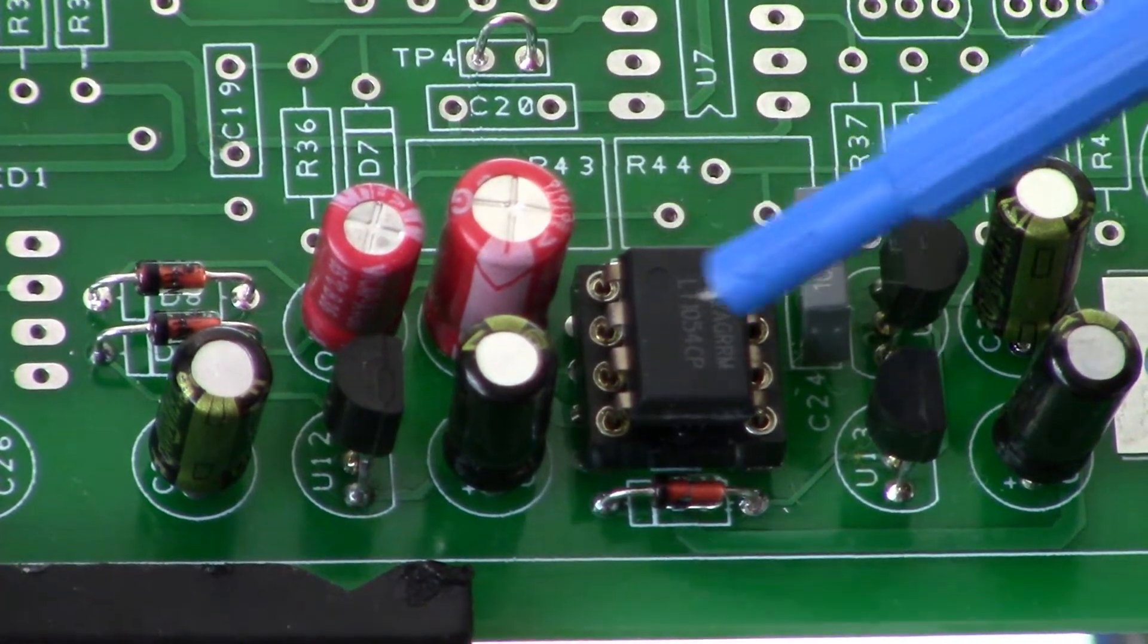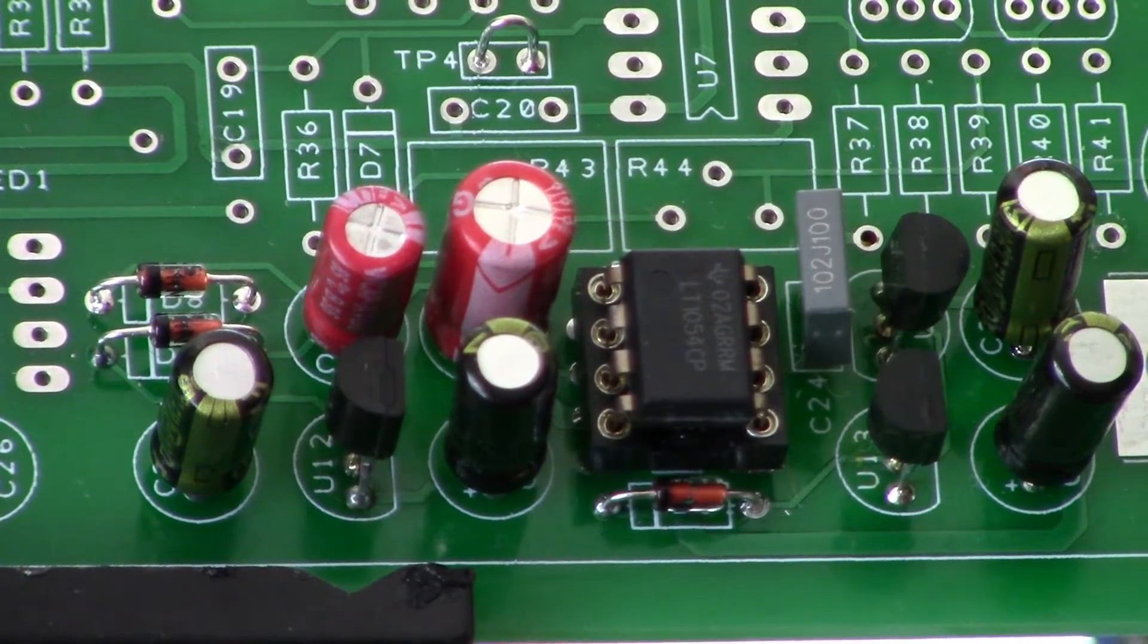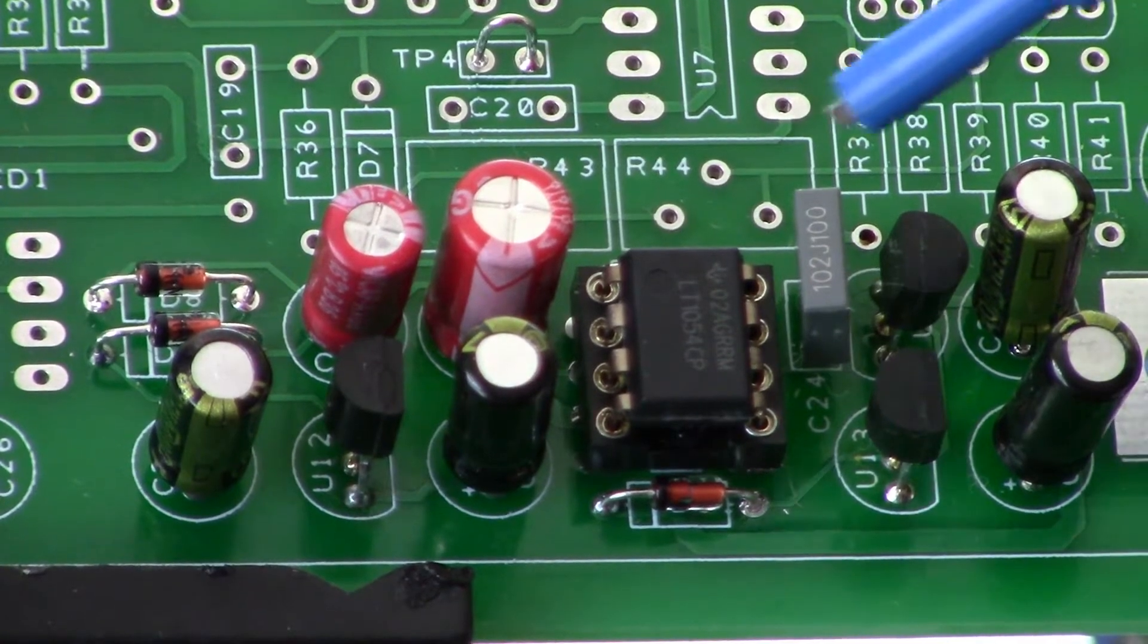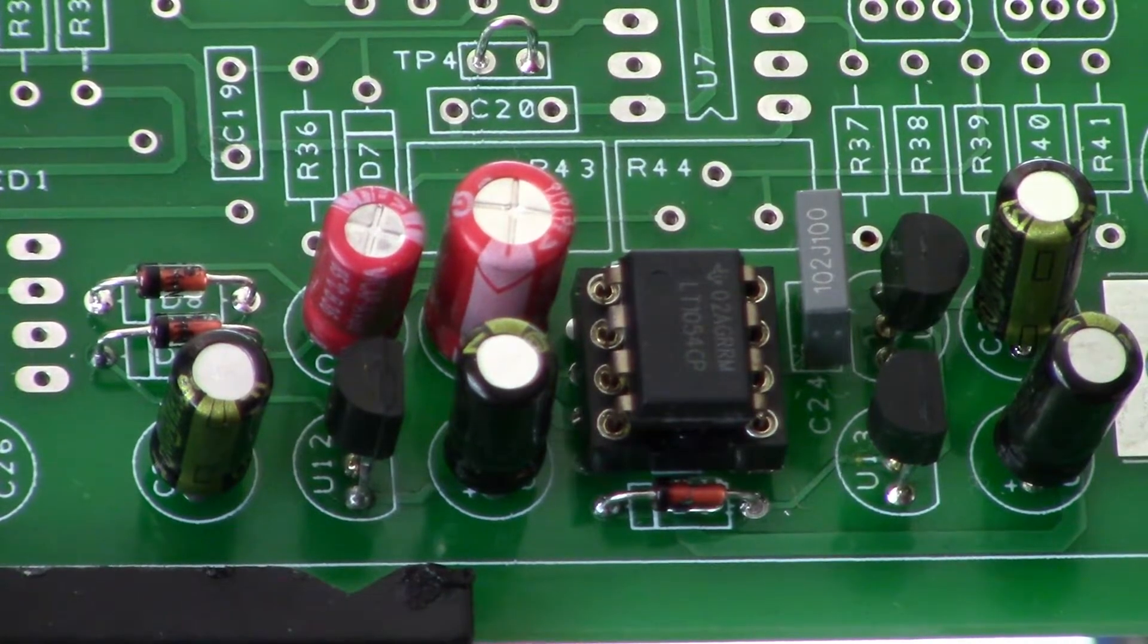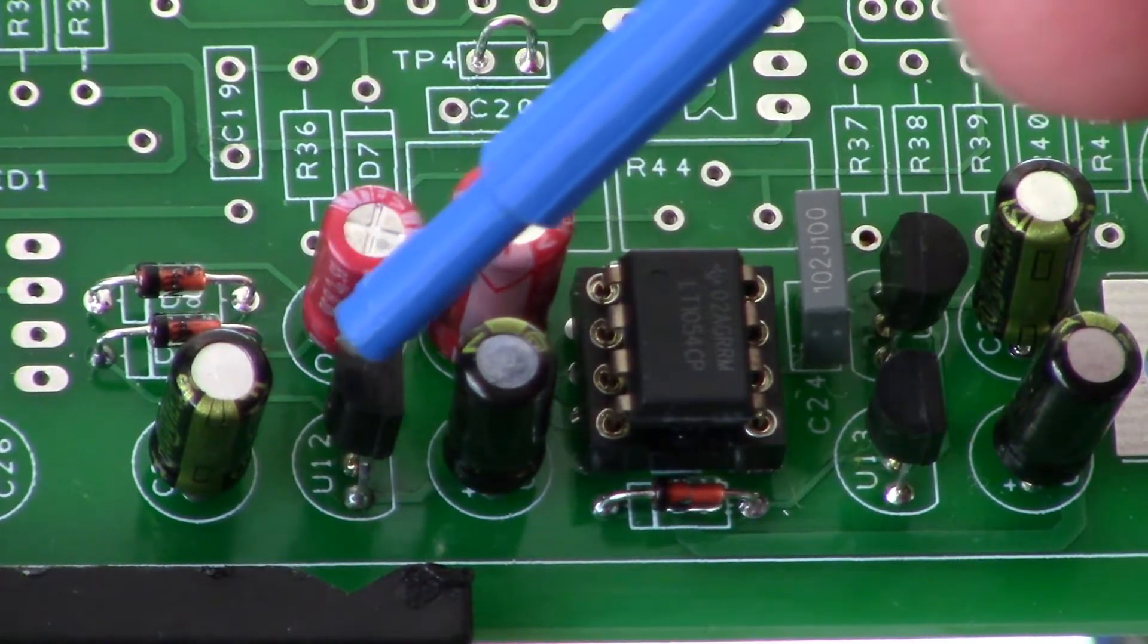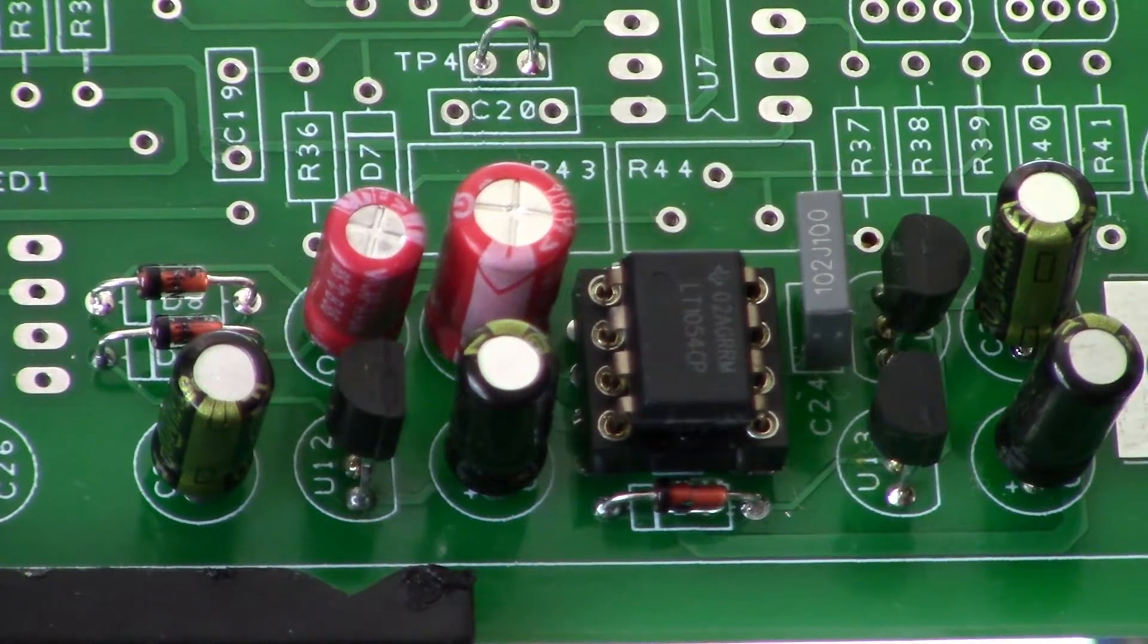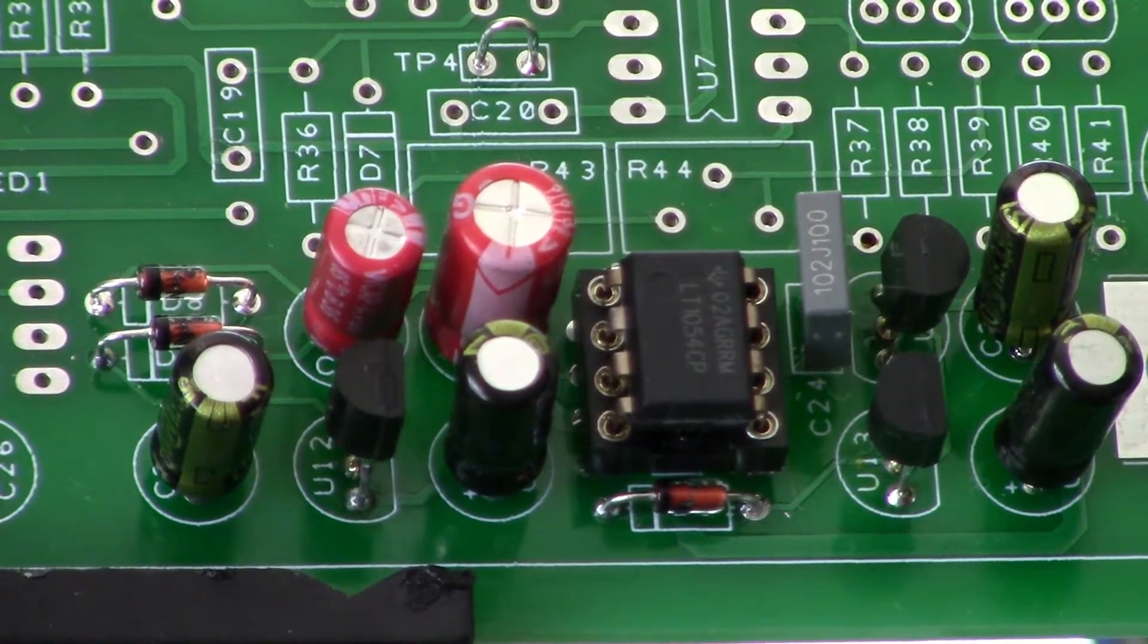I've got an LT1054, you can use a 7660 if you want, I prefer the LT1054. We've got two 79L05s, those are for the minus 5 volts. We've got a 78L05 for the plus 5 volts, and that's really about it. You can see the other assorted capacitors and some diodes, but that's it.